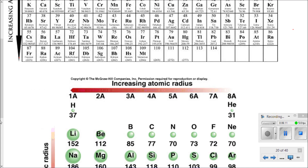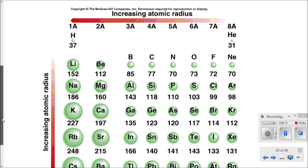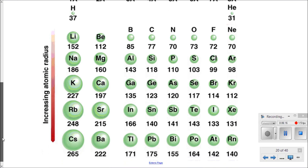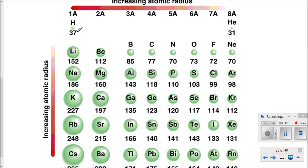This diagram shows the sizes in picometers - really, really tiny. As you go down a group, more shells are added and atoms get larger. As you go from left to right, atoms get smaller. You can specifically see it in period 2 - atoms get really, really tiny because of the greater effective nuclear charge. The atomic radius is the most important trend we need to know.